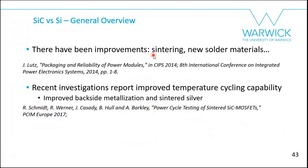There is good news though — there have been improvements. People want to use silicon carbide, so they have been working on developing good packaging methodologies: sintered silver, sintered copper, new solder materials suitable for silicon carbide. Recent investigations report improved temperature cycling capability with improved backside metallization and sintered silver. The latest research publications show people are working on good packaging alternatives for silicon carbide devices.